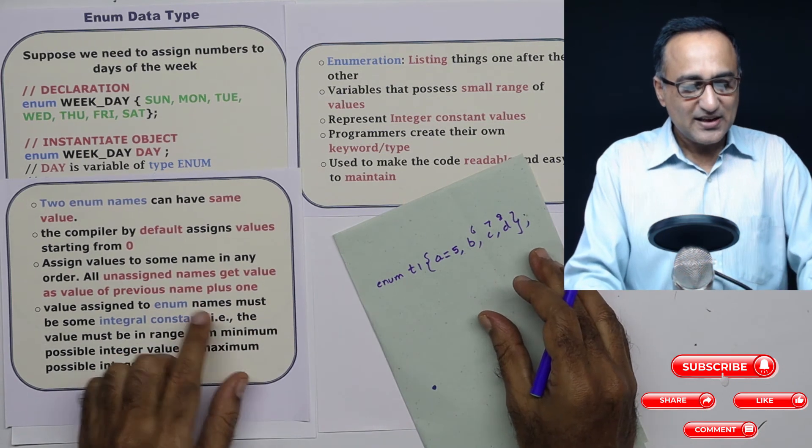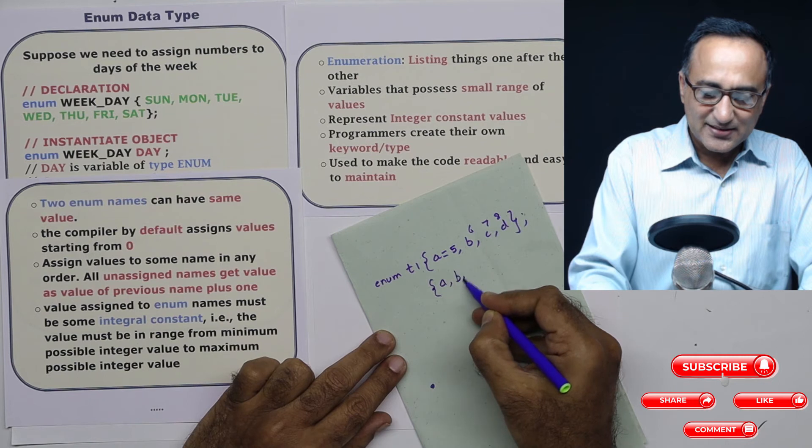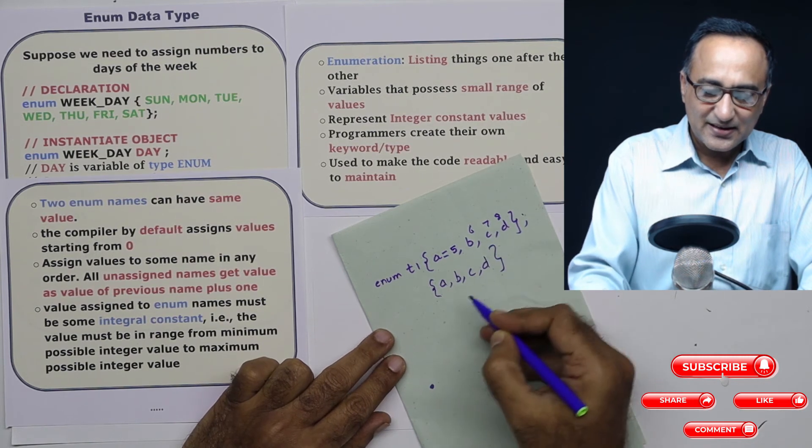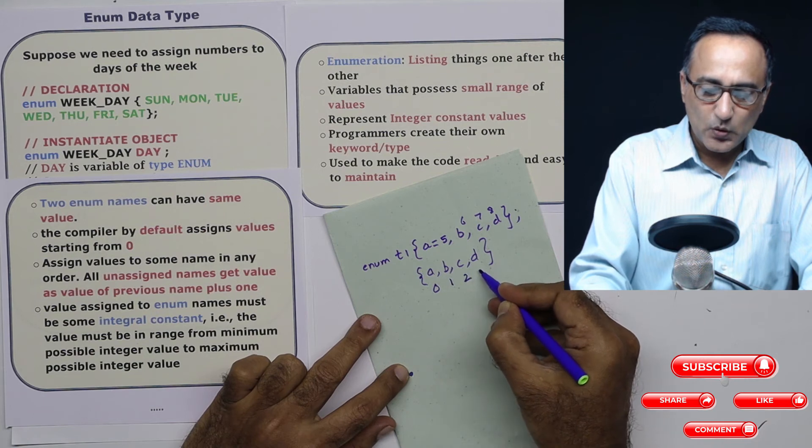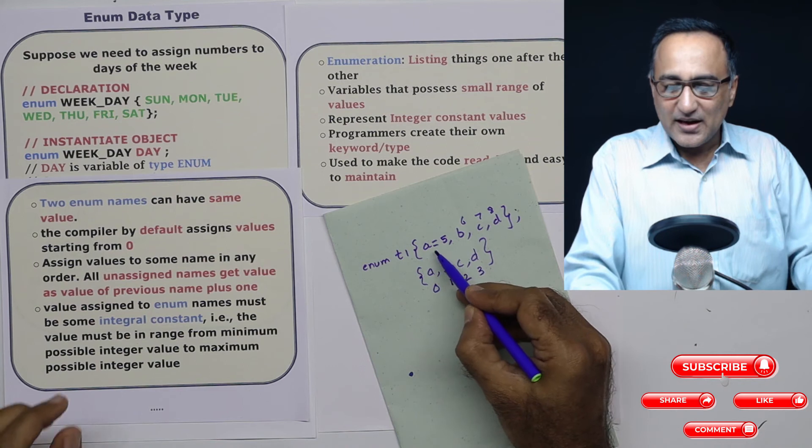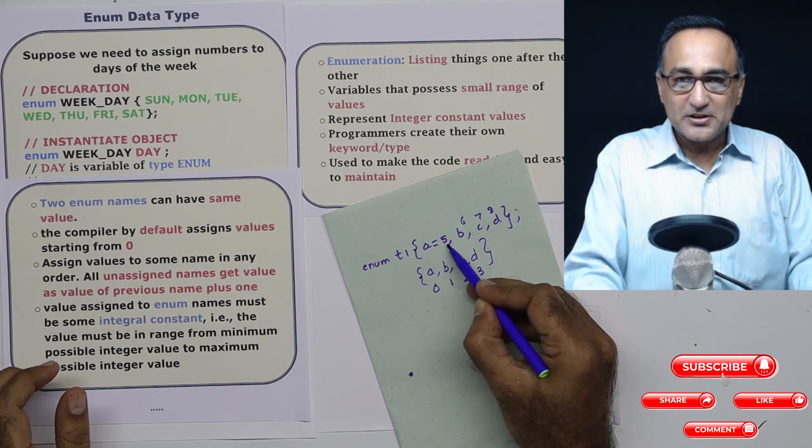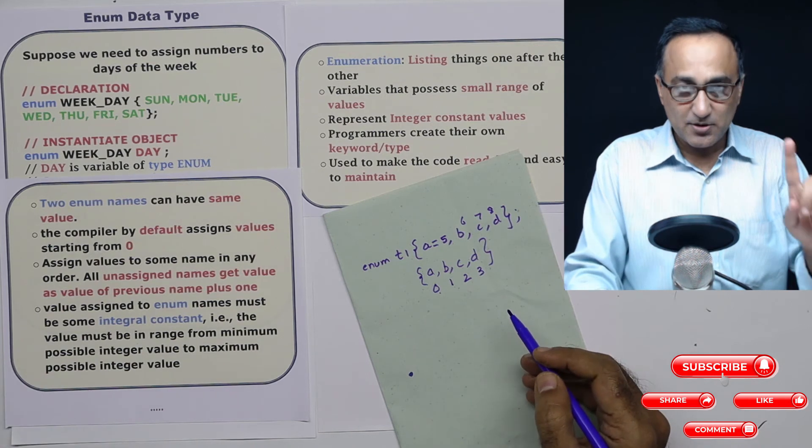So what I mean here is, if I fail to give this initial value, suppose I had declared something like this, a, b, c and d. In that case, a would have been 0, b would have been 1, c would have been 2 and d would have been 3. So if you do not give it any value to one of those variables, then it will start taking from 0 to 1 to 3. That's number 1.